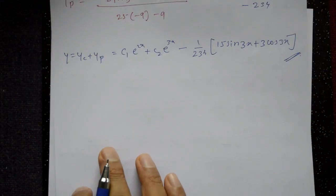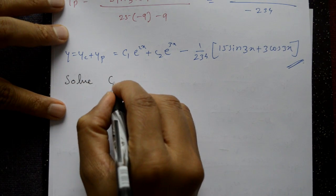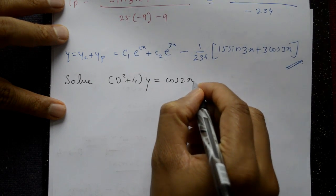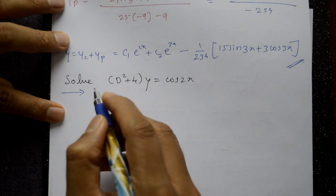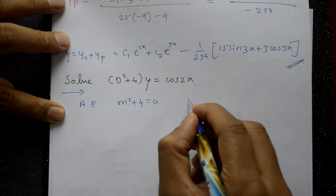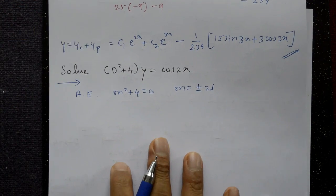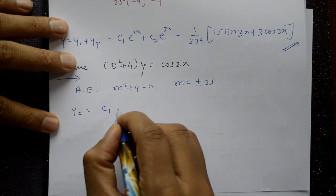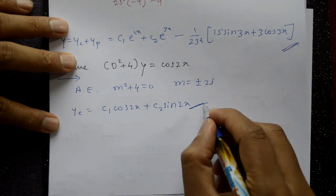Next example: Solve (D² + 4)y = cos2x. The auxiliary equation is m² + 4 = 0, giving m = ±2i. The complementary function is yc = c₁cos2x + c₂sin2x.